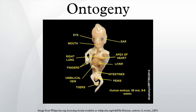Ontogeny, embryology and developmental biology are closely related studies and the terms are sometimes used interchangeably. Recently, the term ontogeny has been used in cell biology to describe the development of various cell types within an organism. Ontogeny is a useful field of study in many disciplines, including developmental biology, developmental psychology, developmental cognitive neuroscience, and developmental psychobiology.